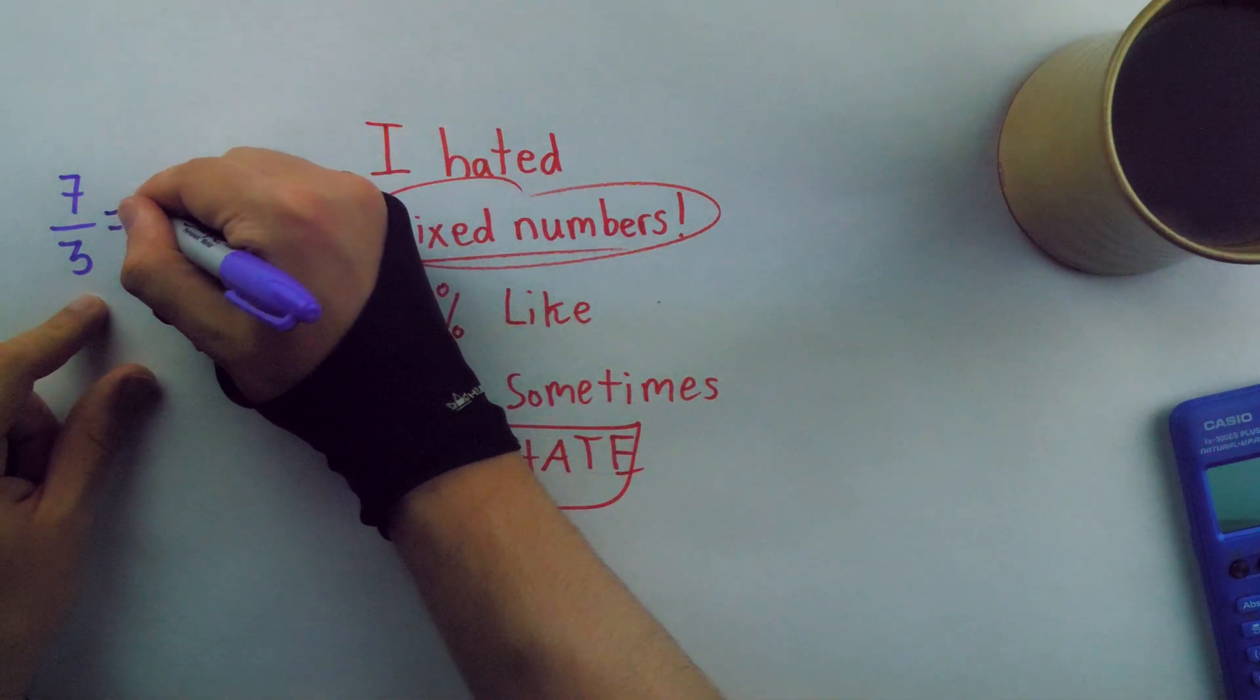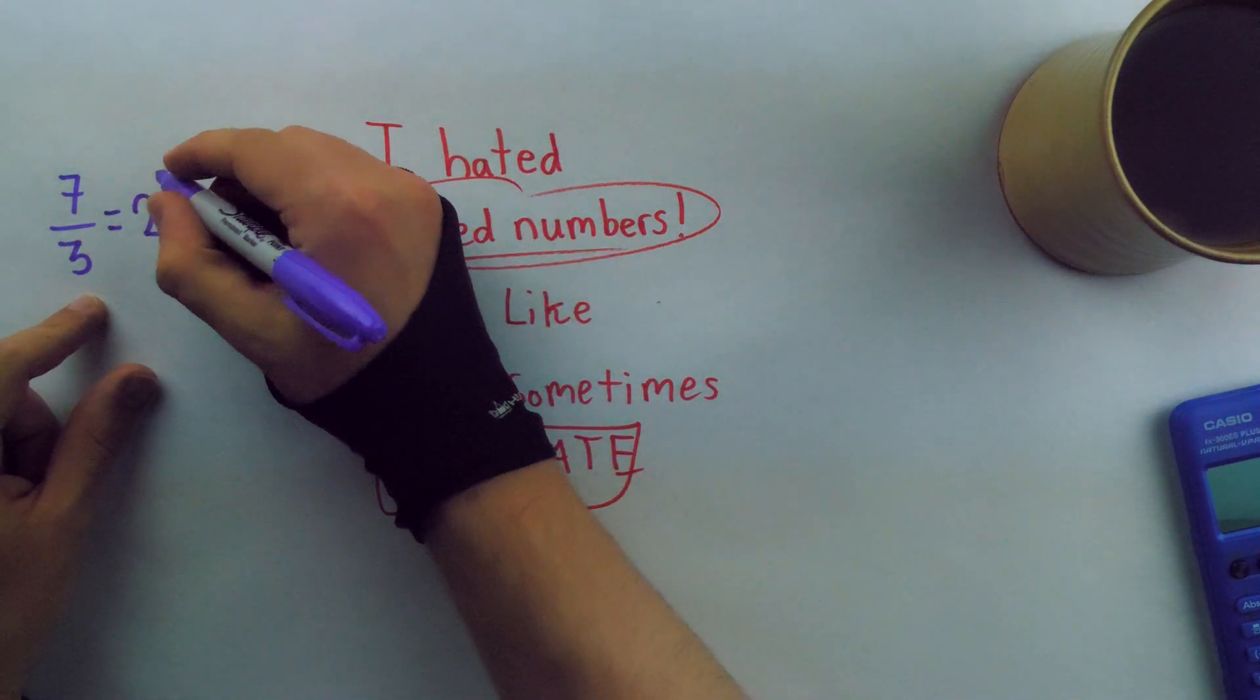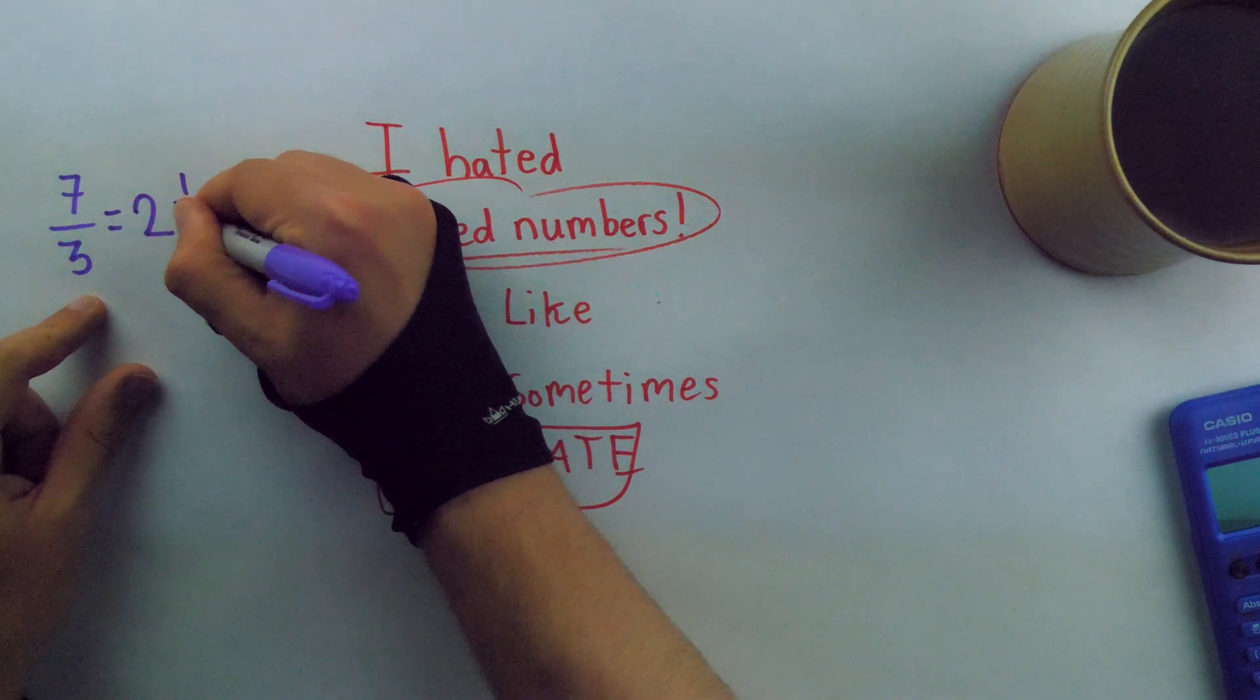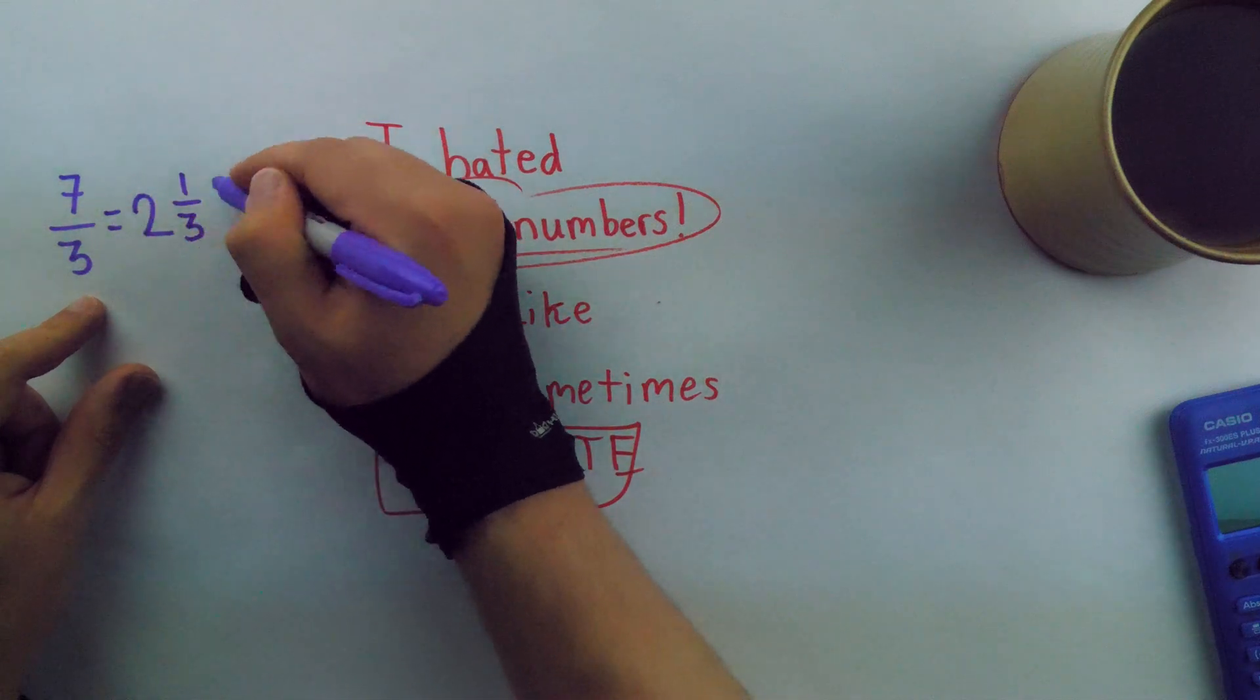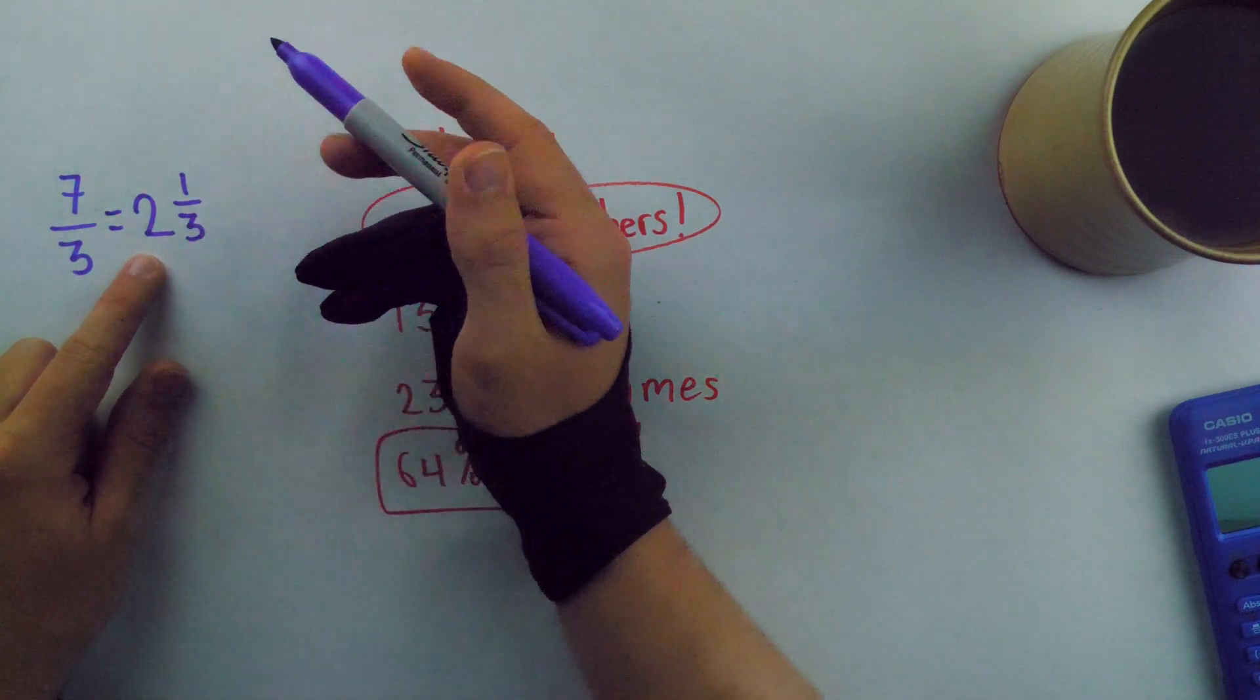Well, if we write it as a mixed number, those wholes get to be written separately. We could write it as a mixed number like this. Two, because there are two wholes. Three goes into seven twice, two with one-third left over. That's writing seven-thirds as a mixed number. It's a whole mixed with a fraction.